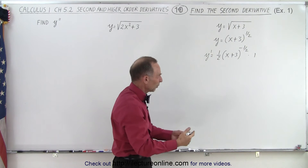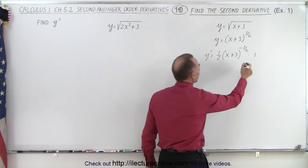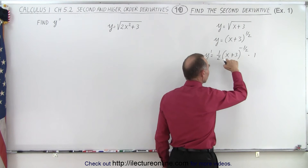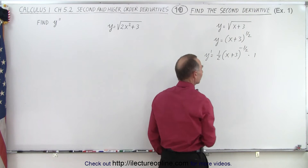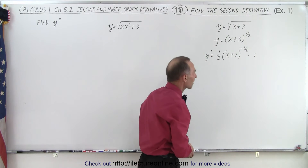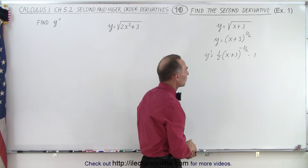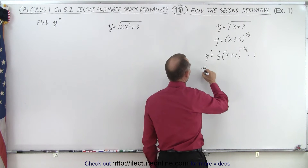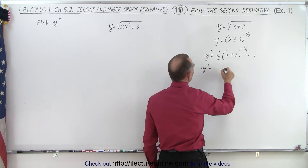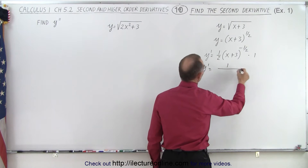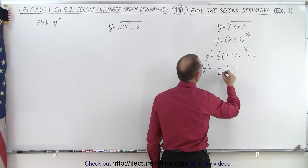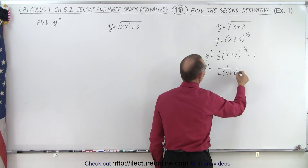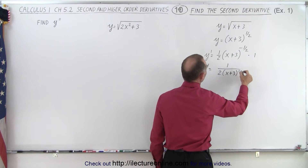We don't really need to write that, but I included it to show that we're still taking the derivative of what's inside. When we rewrite that, it becomes y prime is equal to 1 over 2 times the quantity x plus 3 to the 1 half power.